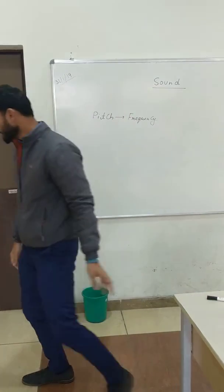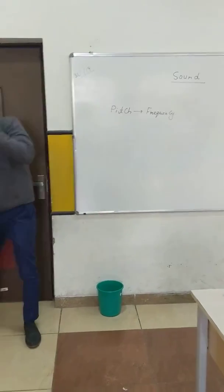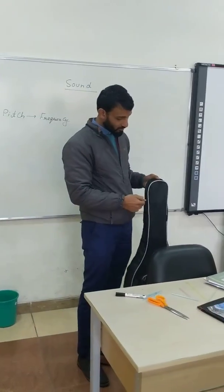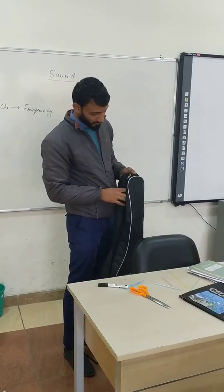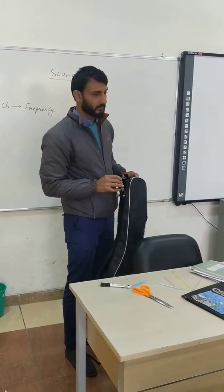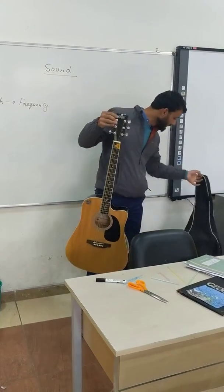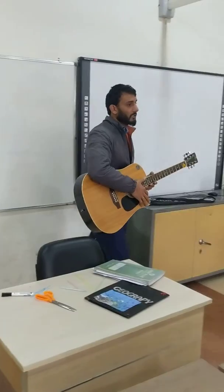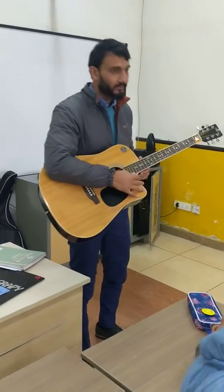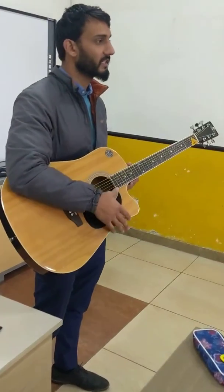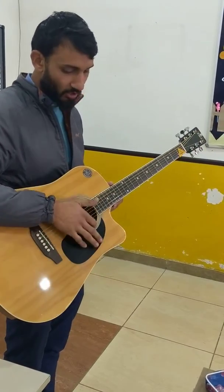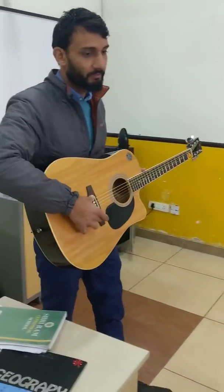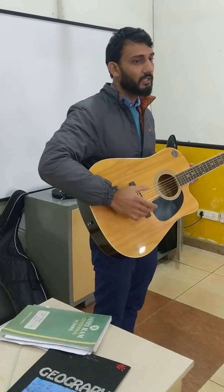To understand this we have a musical instrument — a guitar. As you can see, it is a 6-string guitar. How many strings are there? Six. And then there is a hollow box. And this is what we call the bridge.